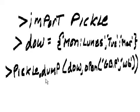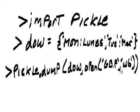Then call pickle.dump(dow, open('gb.p', 'wb')). The file gb.p will be your pickle file. 'wb' stands for write binary — it's for writing and it's in binary.